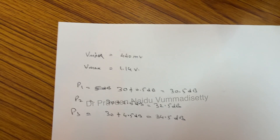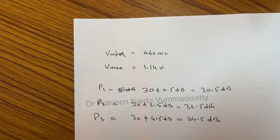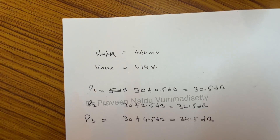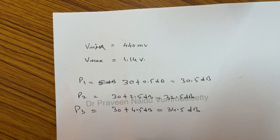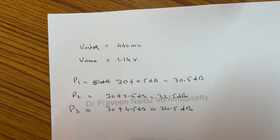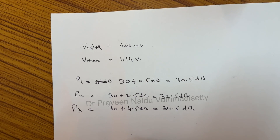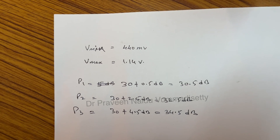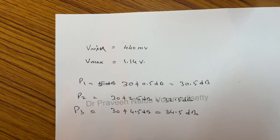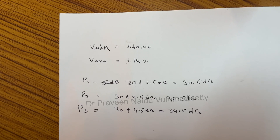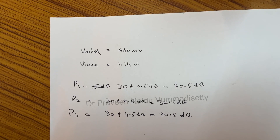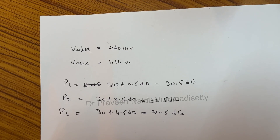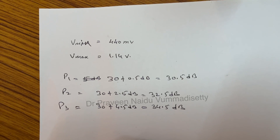Now we have all our measured values: Vmin = 440 millivolts, Vmax = 1.14 volts, P1 = 30.5 dB, P2 = 32.5 dB, P3 = 34.5 dB. By using these values, we need to verify the S-matrix.